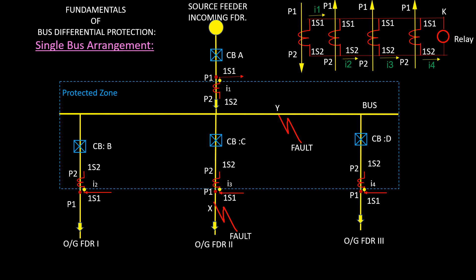Suppose a fault occurs at feeder number 2 at point X, outside of the protected zone — a through fault. Circuit breaker C will trip and the other feeders will remain active normally. But if circuit breaker C does not trip, then it will be regarded as a bus fault. Due to fault on bus, all circuit breakers connected with that bus are made to issue a mandatory trip after the shortest time delay. This is known as LBB — Local Breaker Backup Protection.